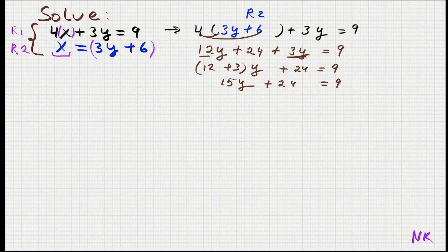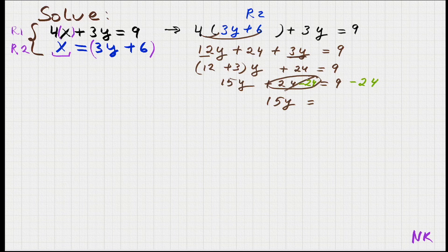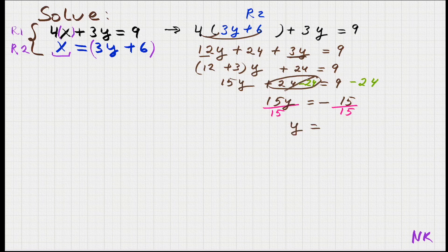Now that the left side is simplified, we can solve for y. We are multiplying y by 15 and adding 24. In reverse order: subtract 24 from both sides — this adds up to 0 on the left, leaving 15y equals 9 minus 24, which is negative 15. Since y is being multiplied by 15, we divide both sides by 15, and we get y equals negative 15 divided by 15, which is negative 1.